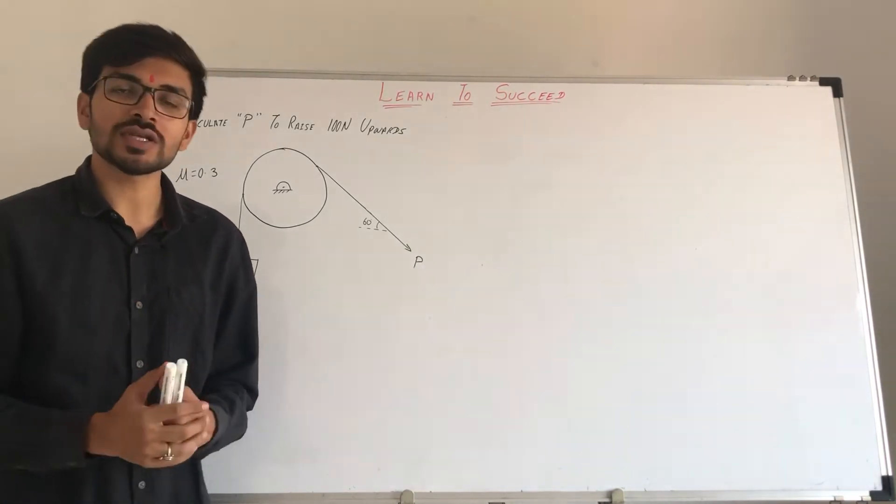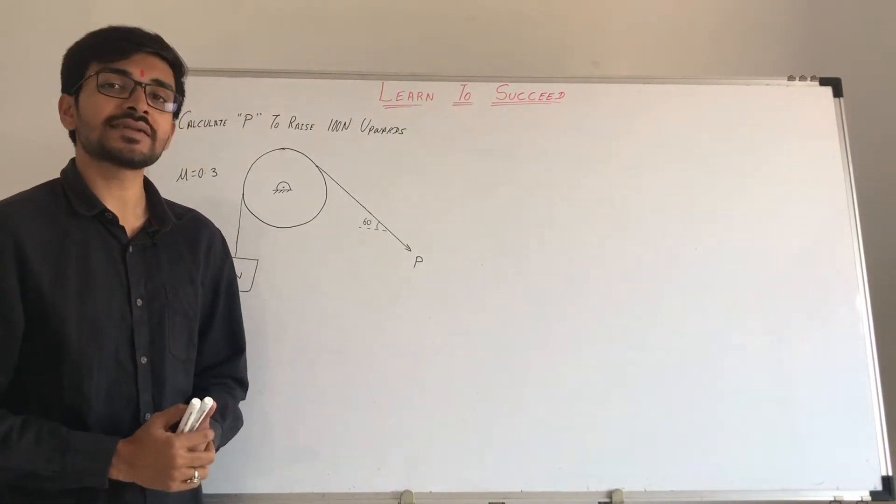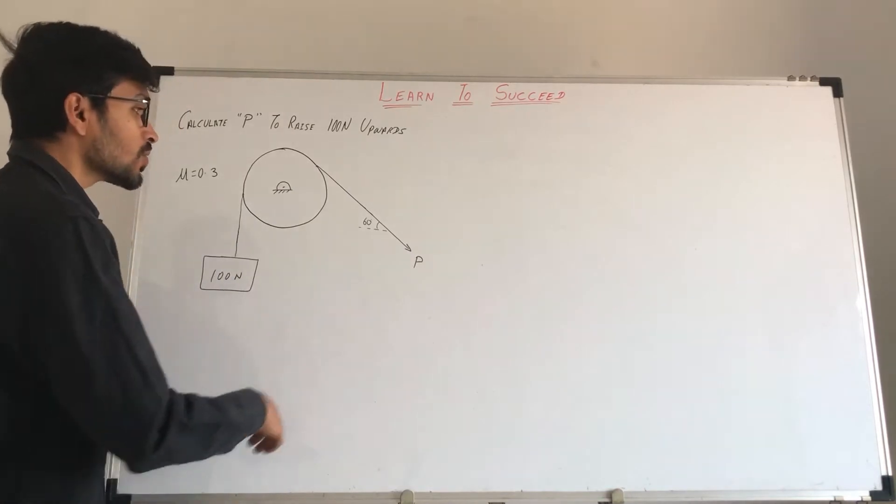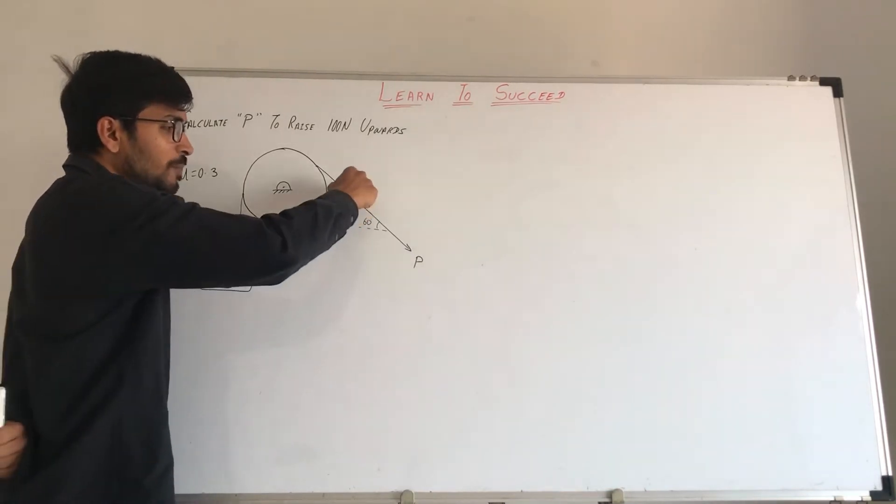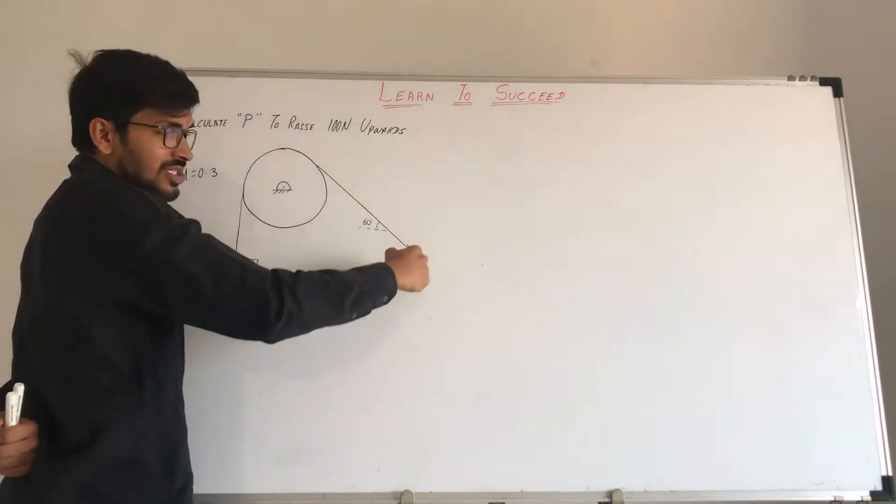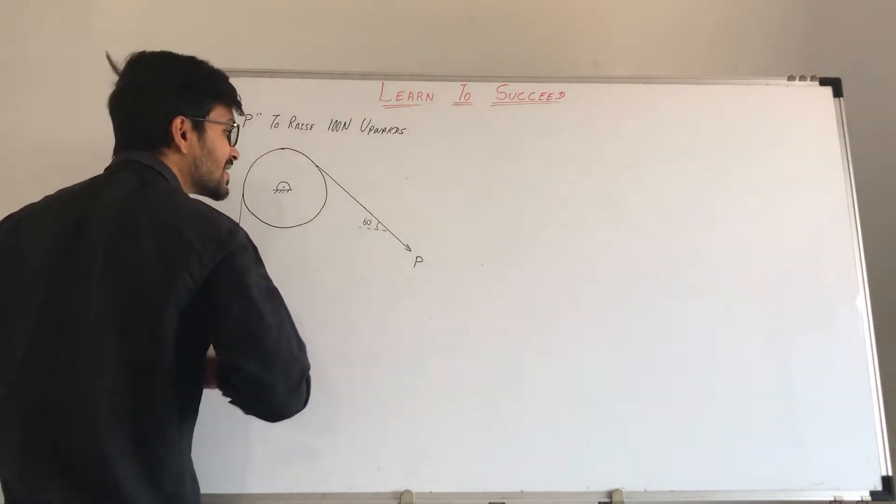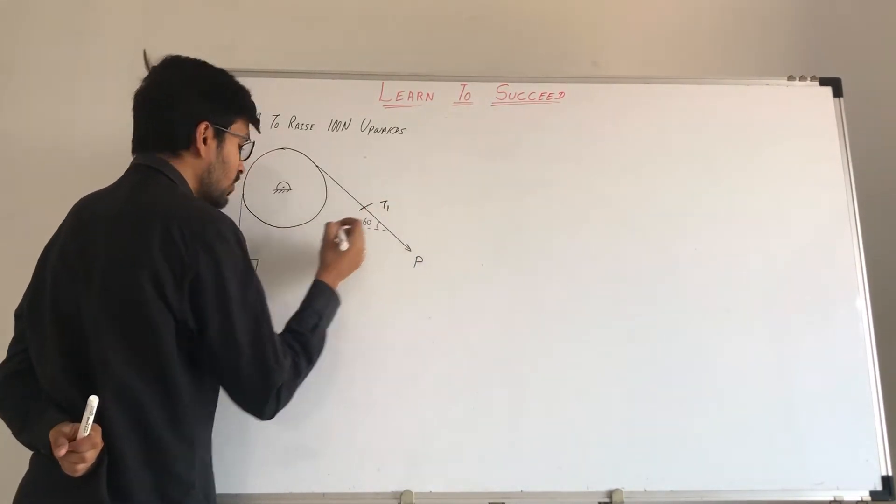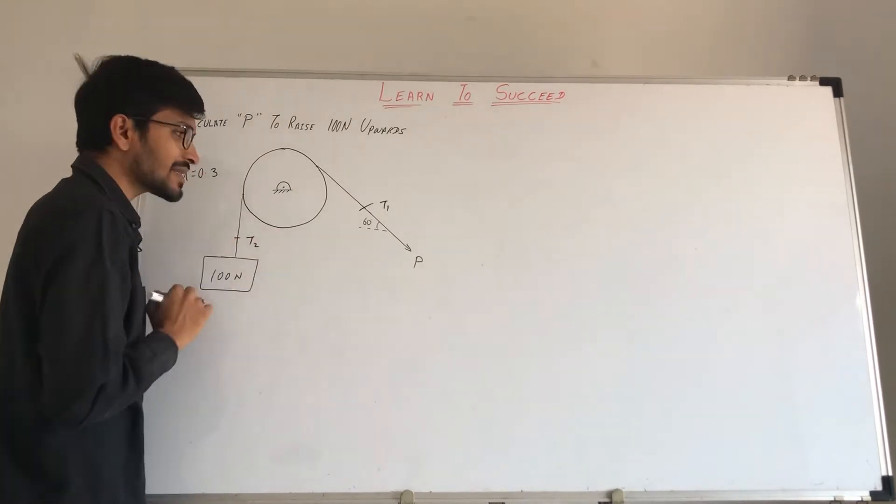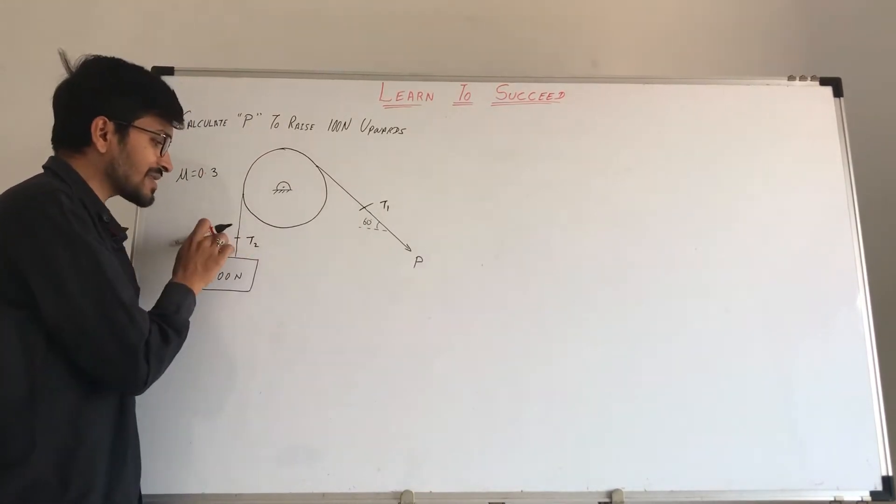Here in belt friction there are two tensions, T1 and T2. T1 is tight side tension and T2 is slack side tension. So if we move this to the top, we need to find P's value. That will be our tight side tension and we will denote T1. And the other will be T2, which is slack side tension, because in comparison this side tension is less.